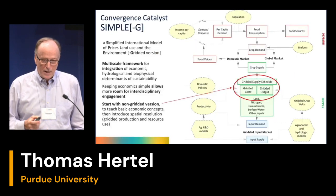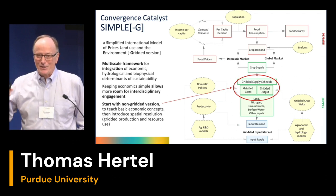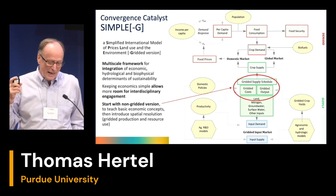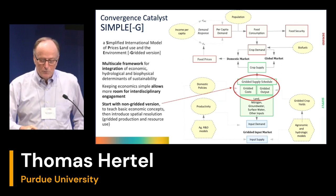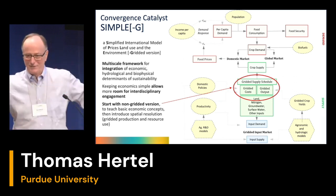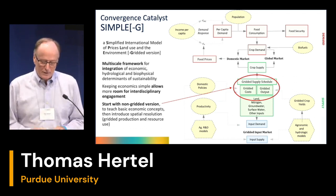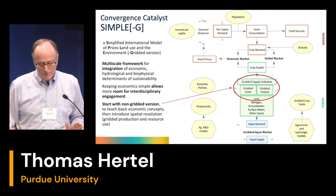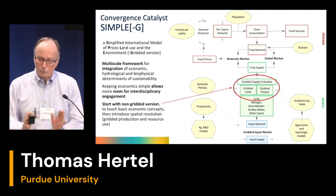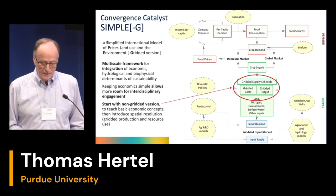This is a diagram I was so happy to see presented earlier this morning — it shows this convergence catalyst approach is being adopted by people outside Purdue, by people outside of economics. It shows the broad framework: there's demand and supply, economic thinking behind that. And in the middle, Simple-G adds the geospatial aspect — gridded production, gridded resource use — showing the variation one sees across space.